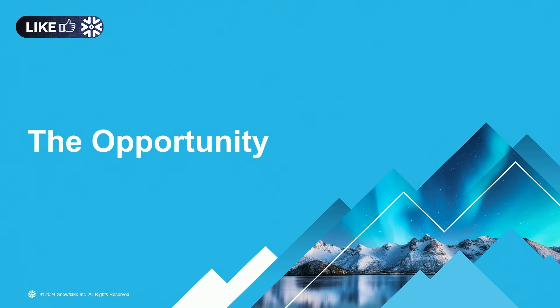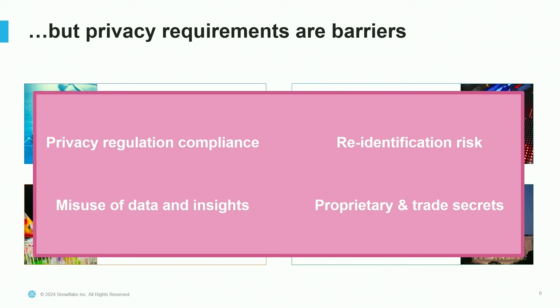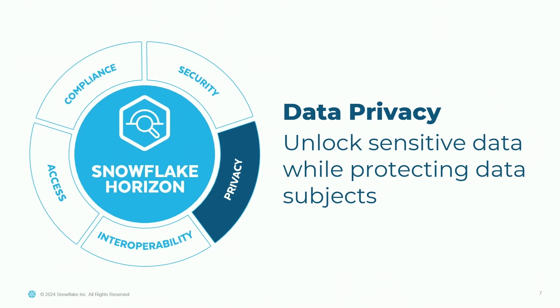Let's start with the opportunity — what are we trying to do with private data and data privacy? Sensitive data exists in all industries. It doesn't just refer to personal information; it can also refer to proprietary information or trade secrets. If we could unlock this sensitive data, we could do all of these use cases and unlock significant value for the business. However, because the data is sensitive, privacy requirements often get in the way, and in most cases, the sensitive data is not even used at all.